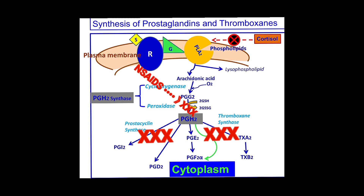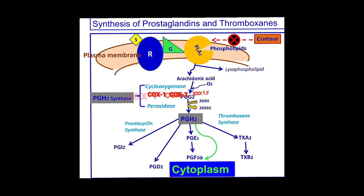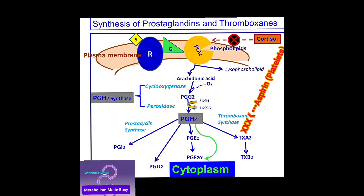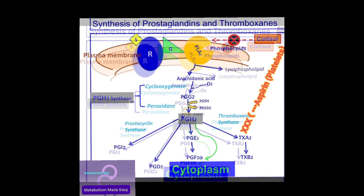Aspirin is the only NSAID that irreversibly inhibits COX-1 and COX-2, and it does that by acetylating, or modifying, the active site of both enzymes. This effect of aspirin is especially pronounced in platelets, where thromboxane production is inhibited for up to seven days.